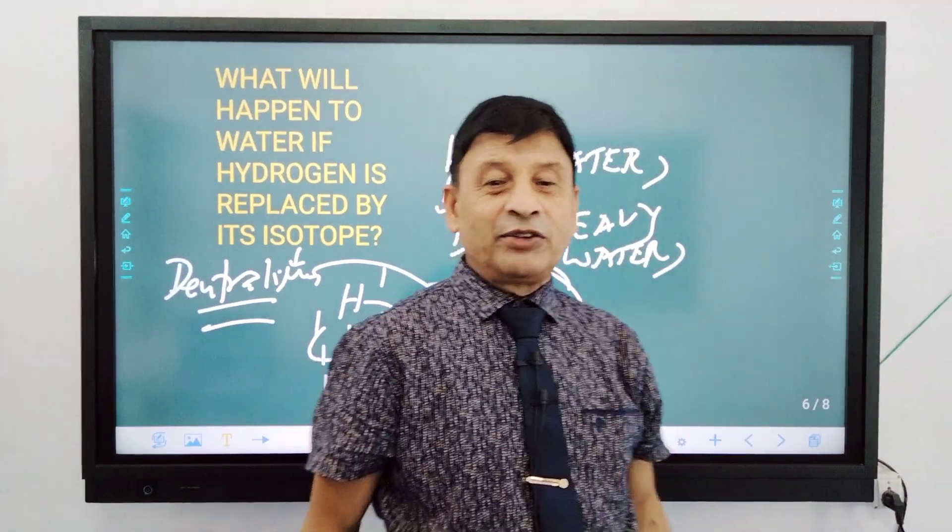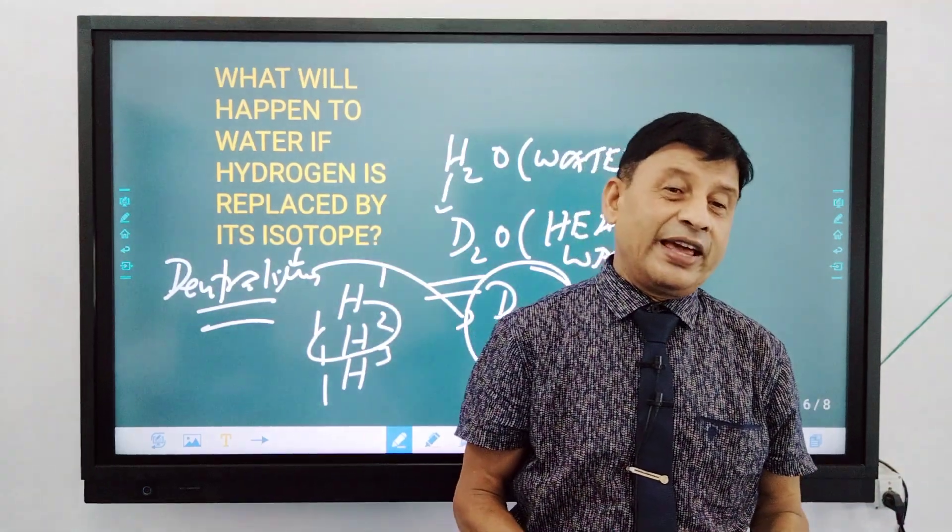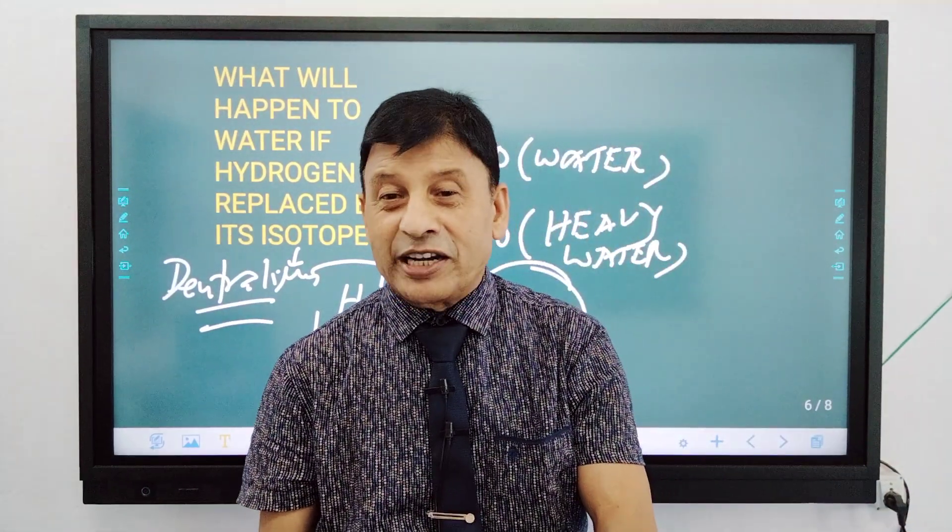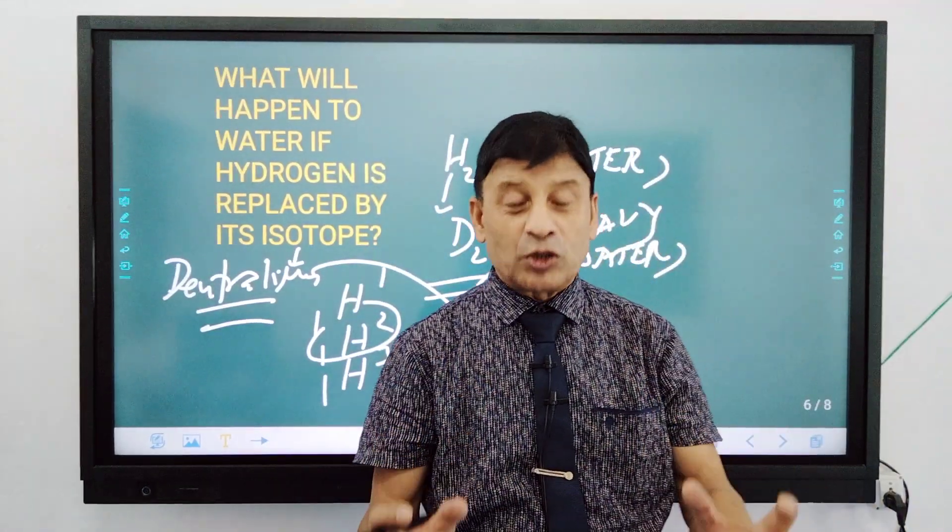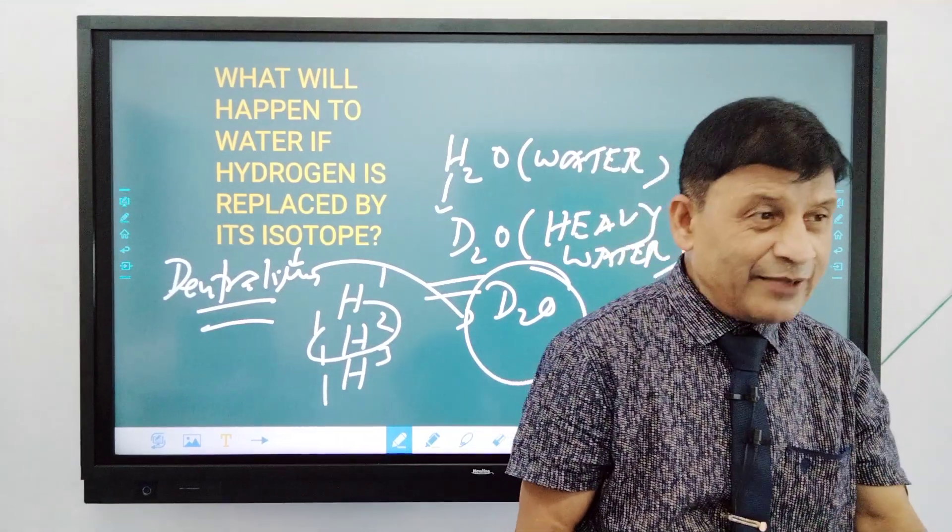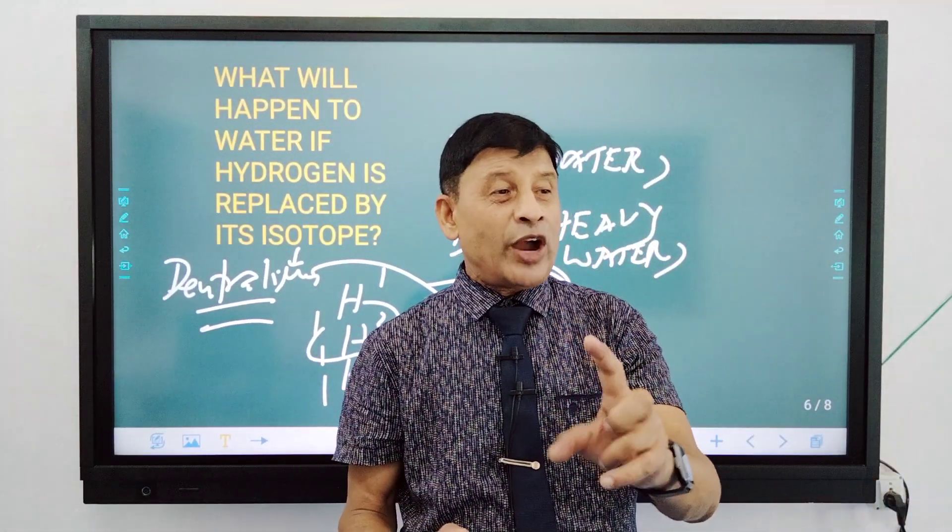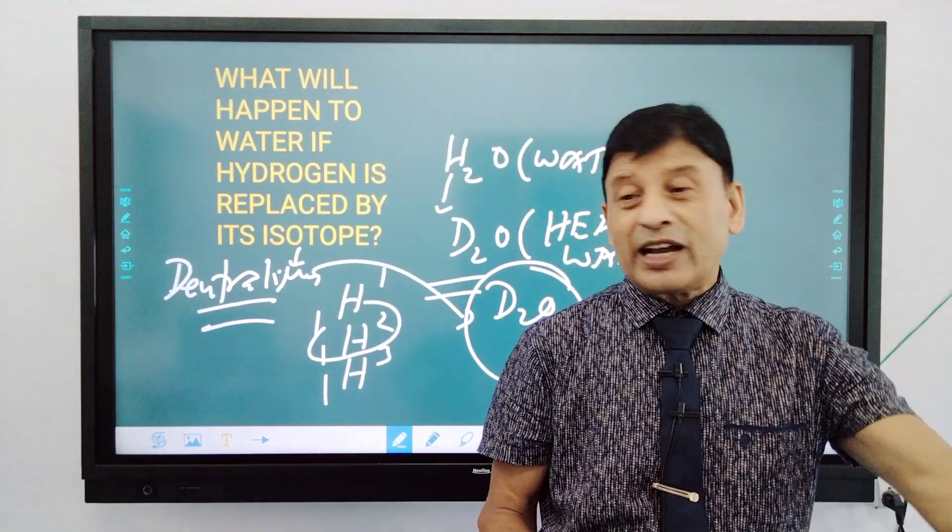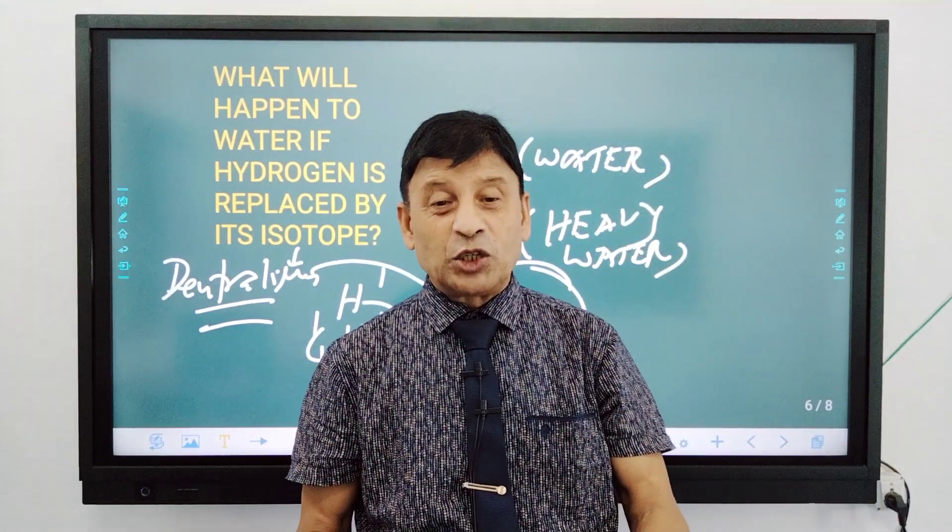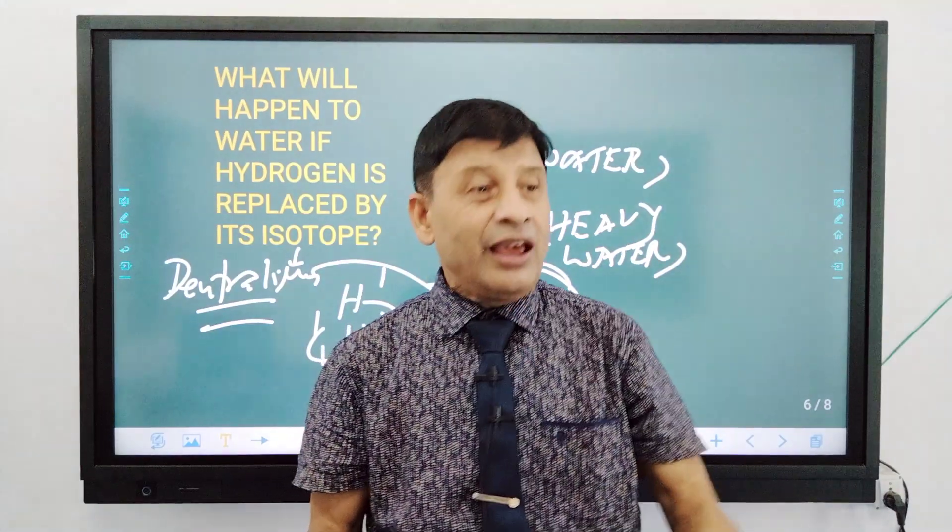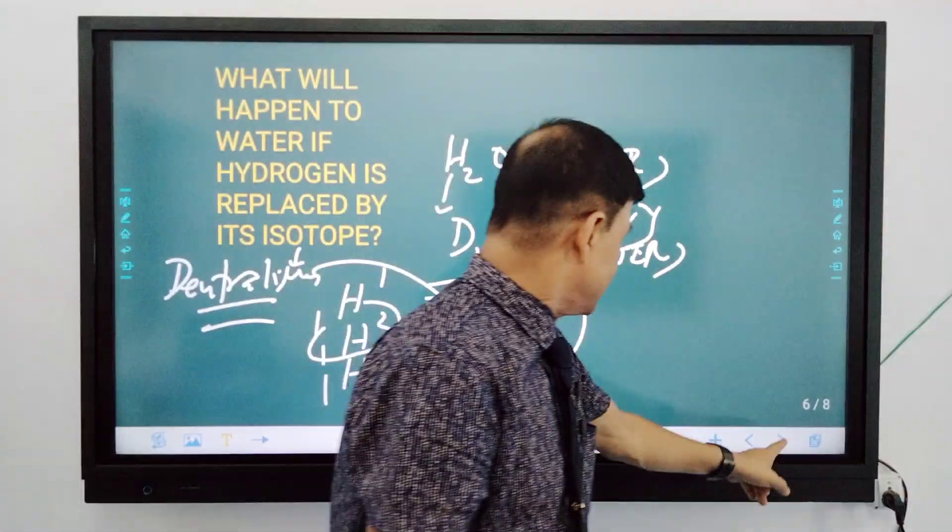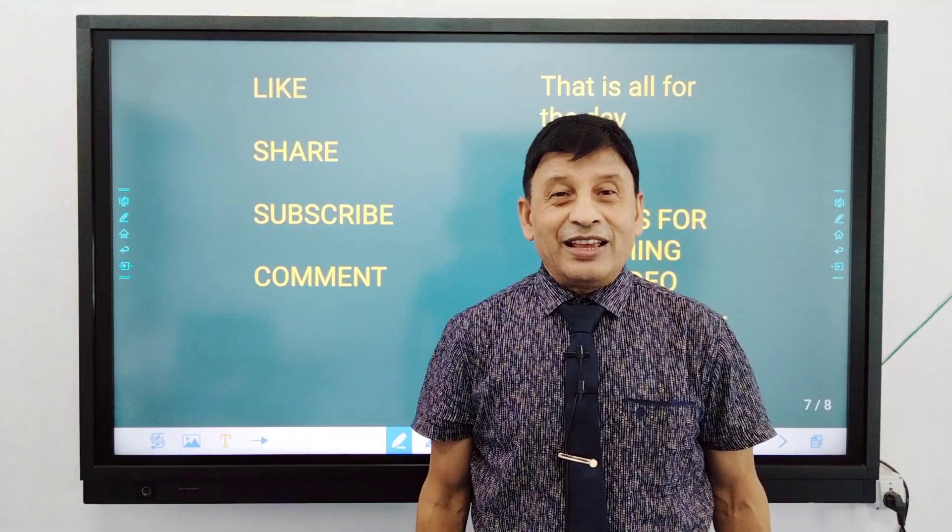This is a lot of use, especially in nuclear reactors. In the nuclear reactor, the oxide is used as the moderator. Moderator means to slow down the neutron, which is a high speed neutron. To slow down the speed of the neutron, we use heavy water as moderator. So that's all for today. Thanks for watching.